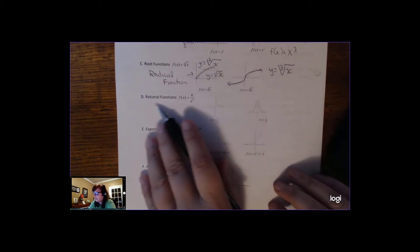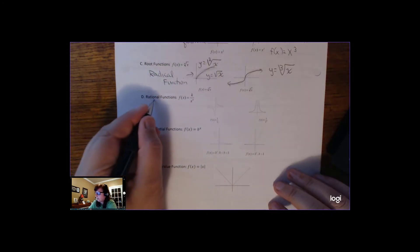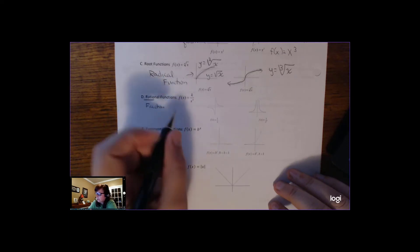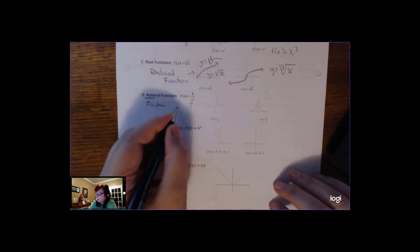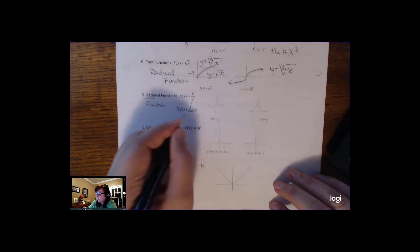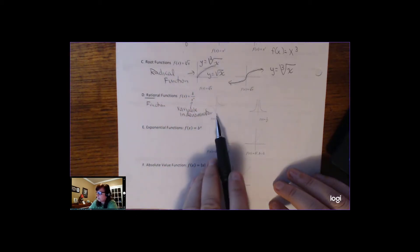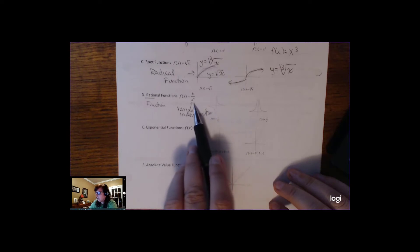So a rational function, rational has the word ratio in it, that means fraction. So a rational function is a function that has a variable in the denominator. And there's a lot of math going on here that I'm skipping over, but the reason that these rational functions look this way is because you can't have 0 in the bottom of a fraction.